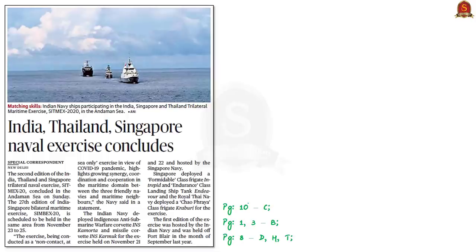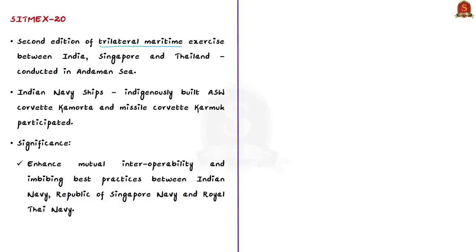Our next discussion is based on a news article about two important maritime exercises held by India — Sitmex and Simbex. Sitmex 20 is the second edition of the trilateral maritime exercise between India, Singapore and Thailand. The 'S' stands for Singapore, 'I' for India, 'T' for Thailand, 'M' for Maritime, and 'EX' for Exercise. It was recently conducted in the Andaman Sea.